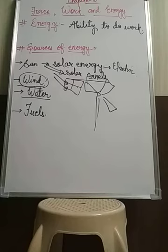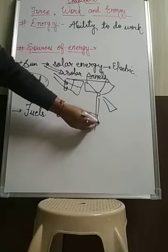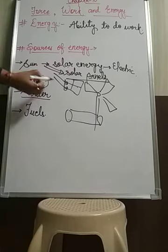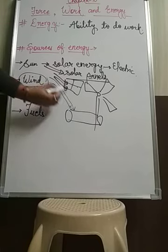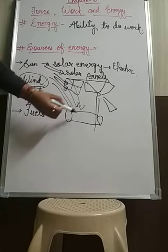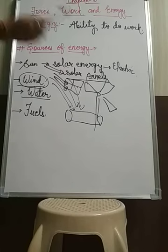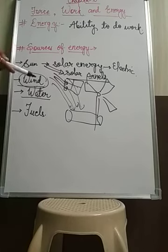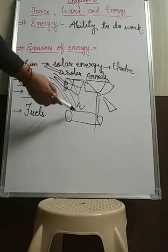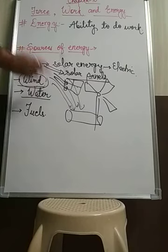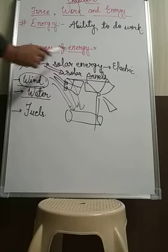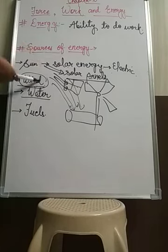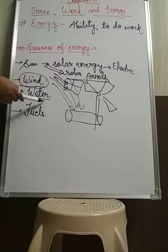The water stored in dams is allowed to fall from a height onto a turbine. Turbines are roller-type devices. Water falls from a great height onto these turbines, causing them to rotate, and as a result the turbines produce electricity. So water energy, like solar energy and wind energy, is also used to produce electrical energy.